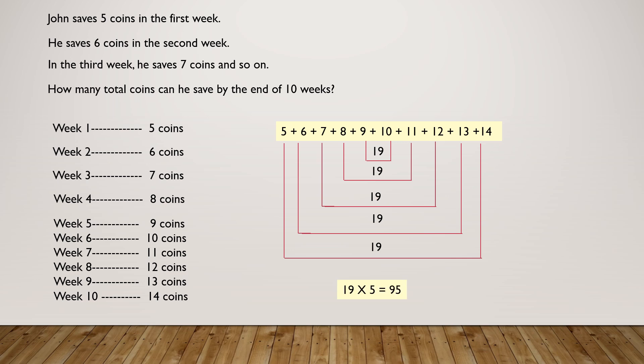Now, what we have to do is 19 times 5 equals 95. Whee! We solved another question!